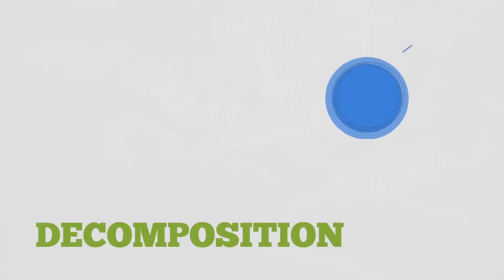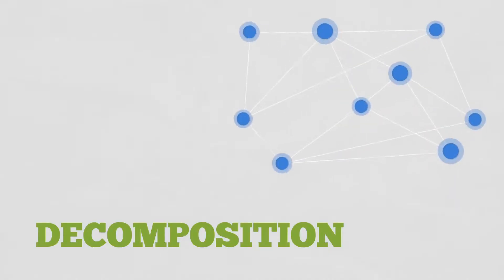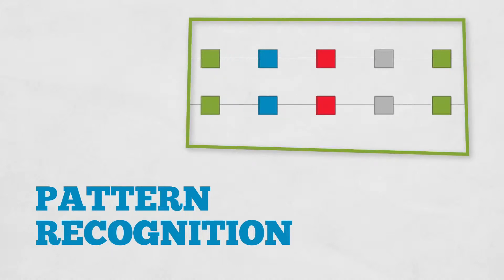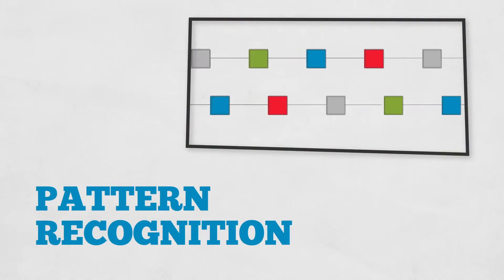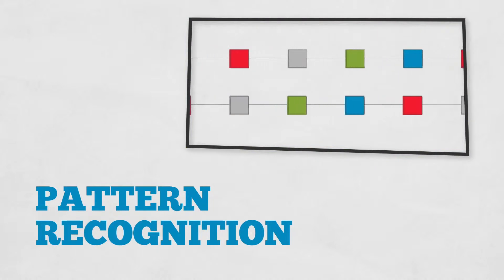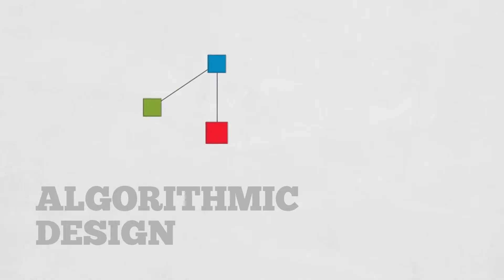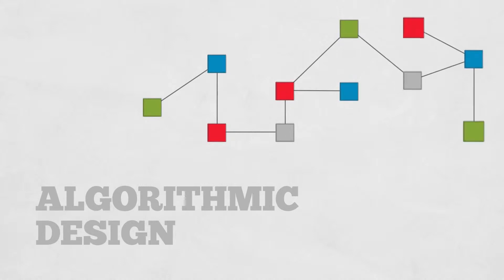Computational thinking is a set of problem-solving techniques that we use here at Google. One aspect of computational thinking is decomposition, where we take a large problem and break it down into smaller pieces. Another aspect is pattern recognition — we use it to identify similarities and differences. The final part is algorithmic design, which allows us to create a step-by-step strategy for solving a problem.